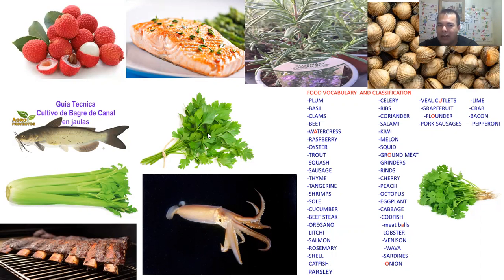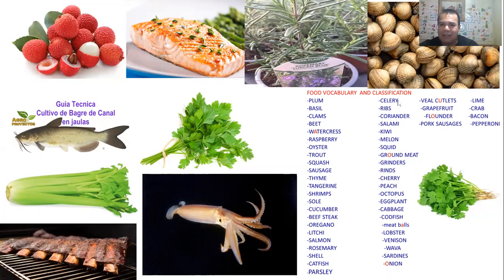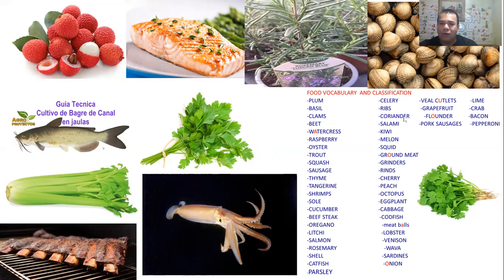Then celery — this one right here. We use it to make salads, or you can blend it with tangerines or grapefruit, and after you do that you start losing some weight because it's really good for that. Next are ribs — it's meat from different animals. It can be pork ribs, beef ribs, venison ribs, or others. Really delicious.